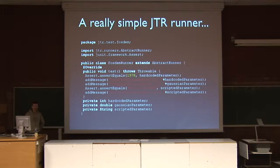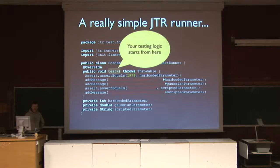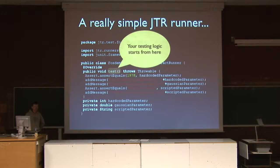Let's now dive into a really simple example. Generally, writing a test in the JTR terminology is translated into writing a runner. A typical runner, which is the first runner in this example, has to inherit from some framework-provided abstract class to inherit some useful behavior. We start coding our testing logic by overriding the test method. The test method can throw any kind of exception, and the JTR runtime will take care of catching all those exceptions and providing the end user with useful diagnostic messages.